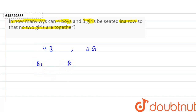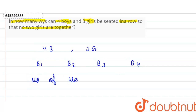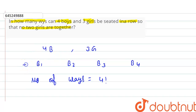Let's assume b1, b2, b3, and b4 are the four boys. The number of ways to arrange these four boys is four factorial ways.